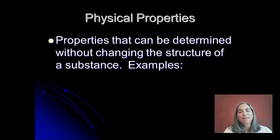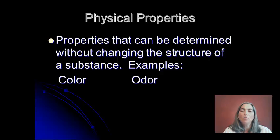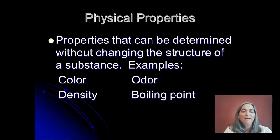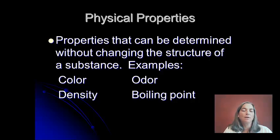Physical properties are things that we can determine about a chemical without changing the structure of a substance. So things like color, which we can just look at, odor, which you can just smell — hopefully by wafting the chemical towards you, not by sticking your nose down in a test tube. Things like density, where we're just measuring mass and volume. Those don't change the chemical structure.